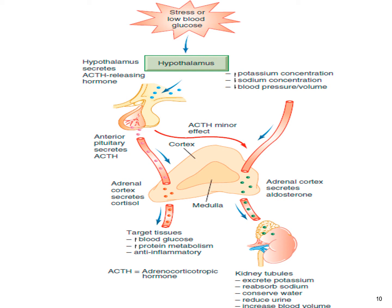Without mineralocorticoids, a person would die within three to seven days because these hormones control the fluid balance, blood volume, cardiac output, exchange of nutrients, and waste in each cell. The mineralocorticoids affect all chemical processes and glandular functions within the body.